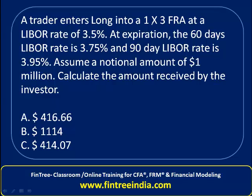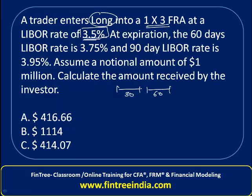A trader enters long into a 1x3 FRA at a LIBOR rate of 3.5%. The meaning of a 1x3 FRA is that after 30 days, since we are long, we would have a right and obligation to borrow for a period of 60 days. The rate at which we have signed the contract is 3.5%.